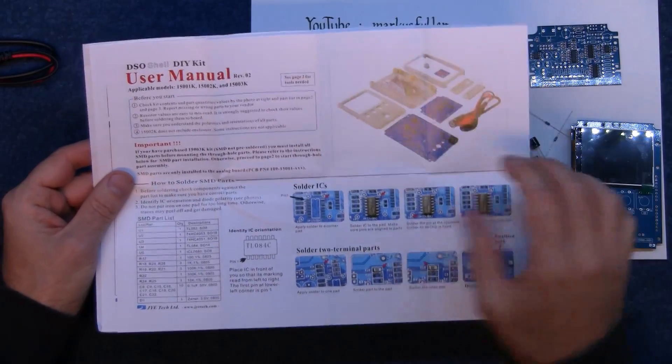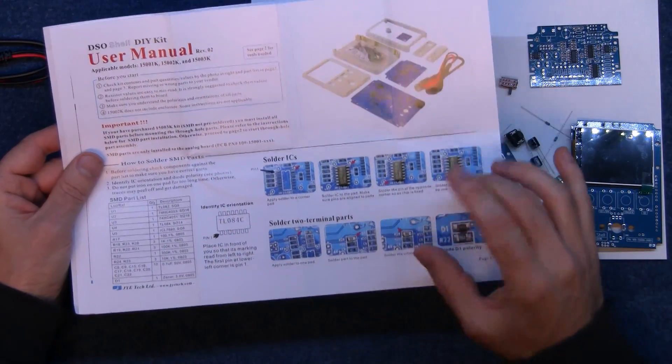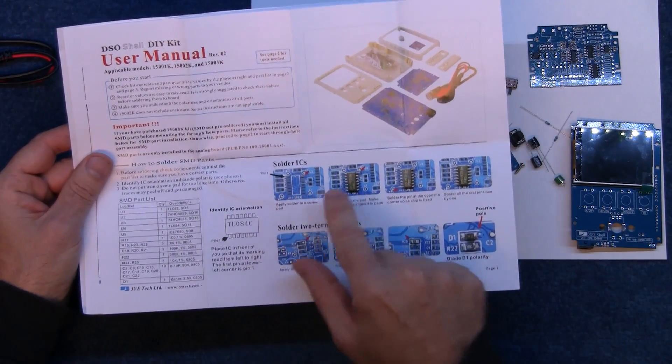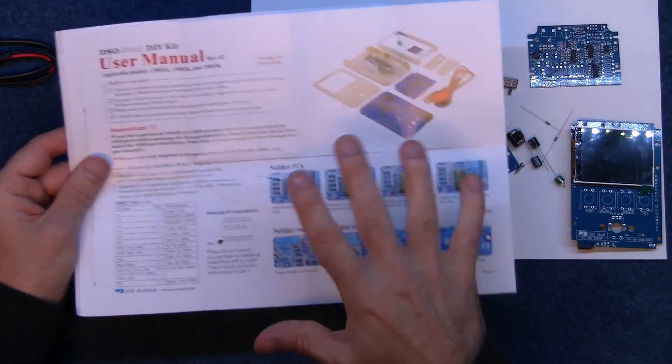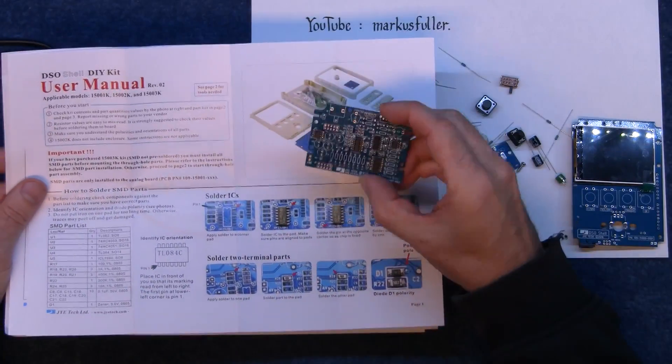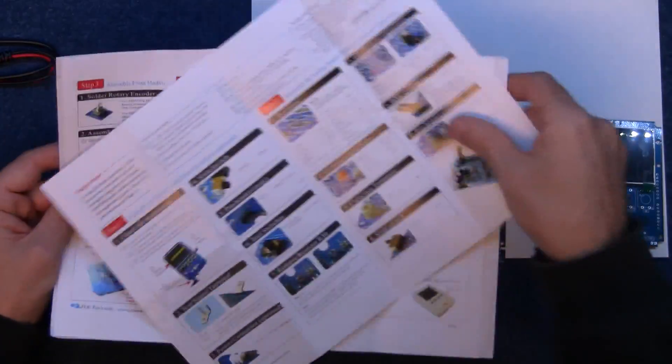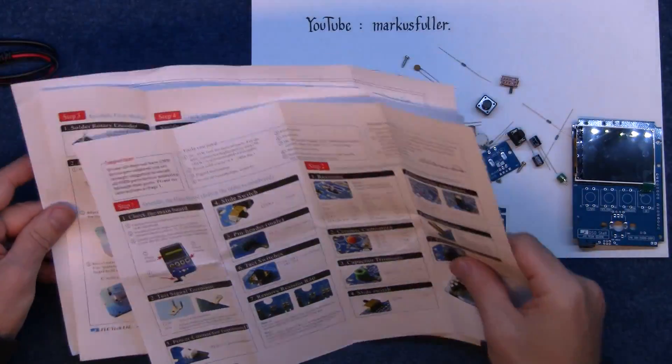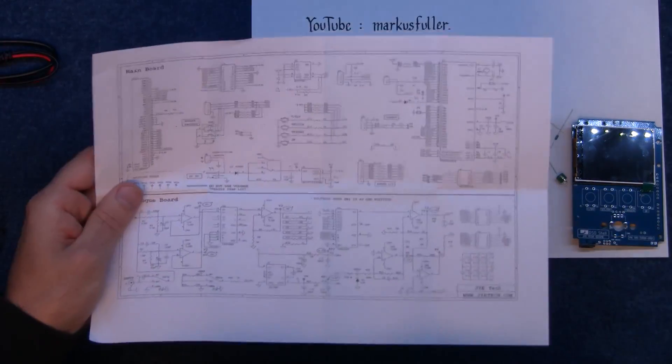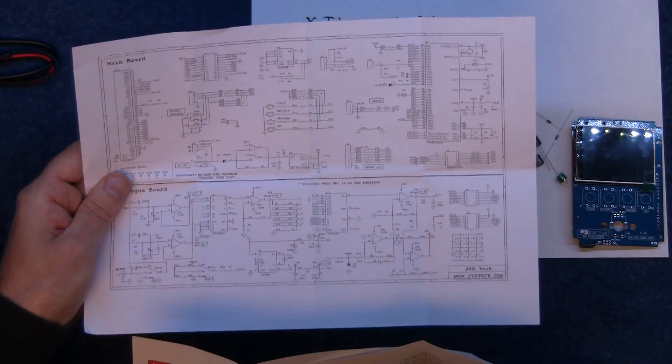Let me show you what we've got. So this is the instruction manual and the first part you can ignore because this is all about placing the surface mount components and that fortunately is already done.